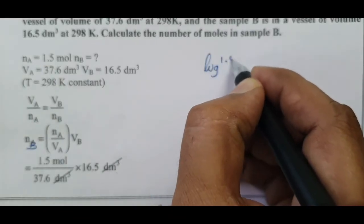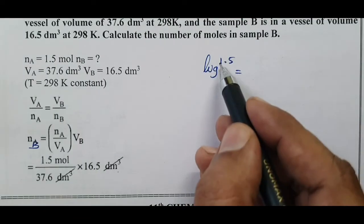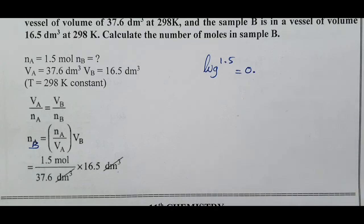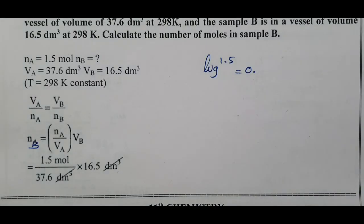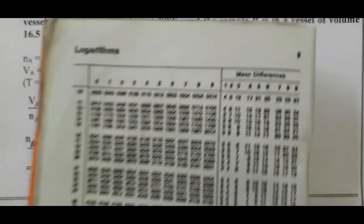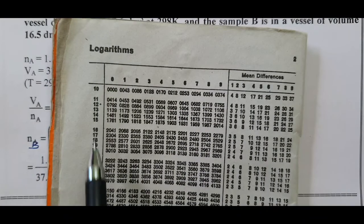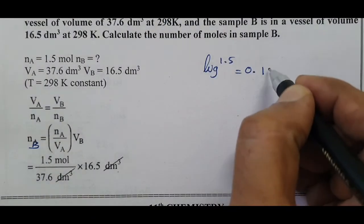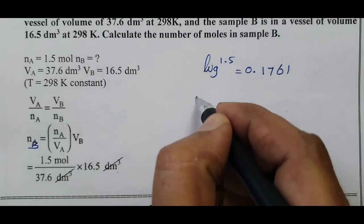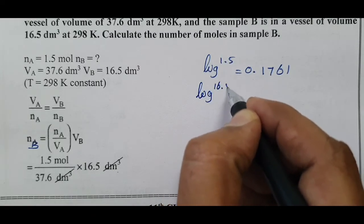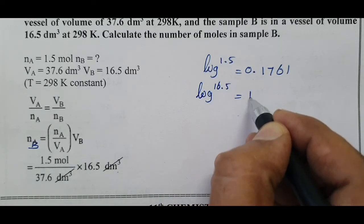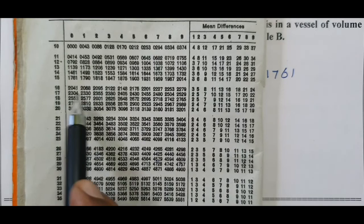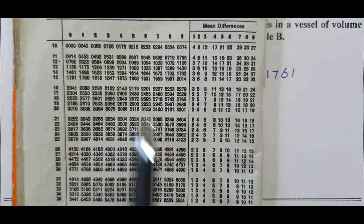Log 1.5, whole number 1 is equal to N-1, formula 1-1 equal to 0.5, so log 1.5 is equal to 0.1761. Log 16.5 is equal to 1.2175.